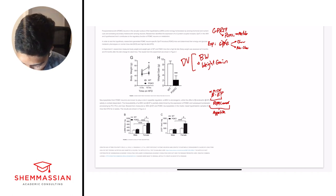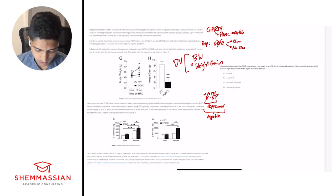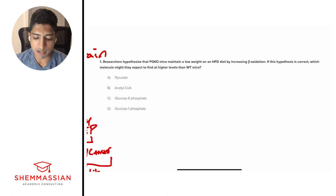So I'll pull up question number one. Researchers hypothesized that PGKO mice maintain a low weight on a high-fat diet by increasing beta oxidation. If this hypothesis is correct, which molecule might they expect to find at higher levels than wild-type mice? A. Pyruvate, B. Acetyl-CoA, C. Glucose 6-phosphate, or D. Glucose 1-phosphate? This is a standalone question, meaning we don't have to go back into the passage to look for the answer.